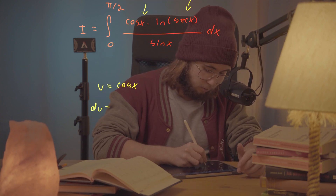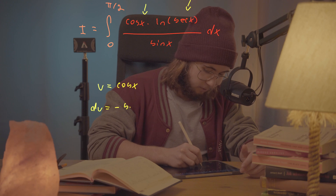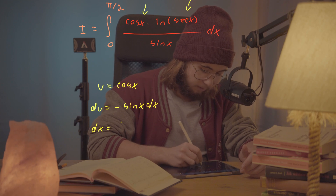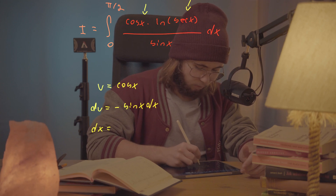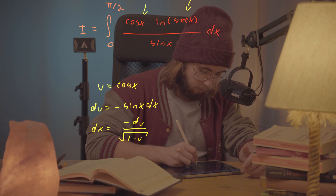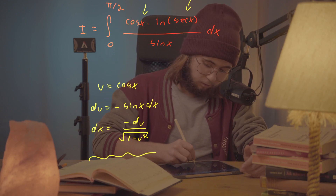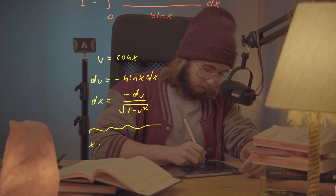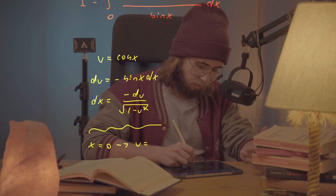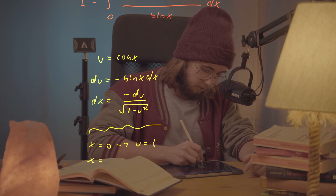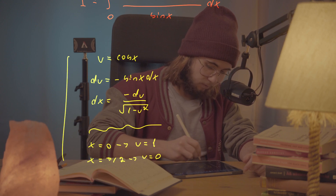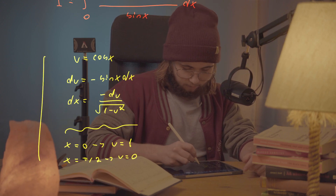With u = cos(x), we get du = −sin(x) dx, or equivalently dx = −du / √(1 − u²), using trig identities. For the bounds: when x → 0, u → cos(0) = 1; when x → π/2, u → 0.